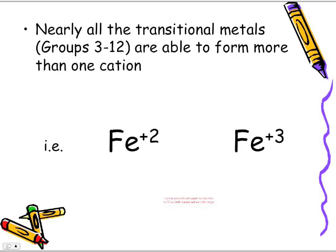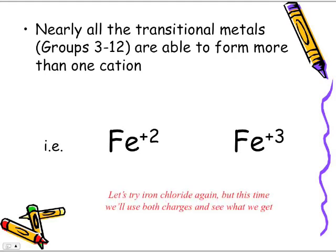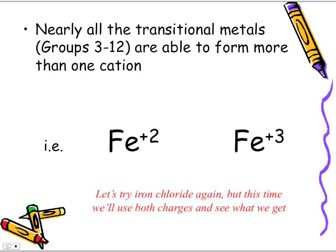Nearly all transitional metals — these are groups three to twelve — are able to form more than one cation. Cation makes reference to metals that have a positive charge. So we have iron plus two, and we have iron plus three. Let's try iron chloride again, but this time we'll use both charges and see what we get.